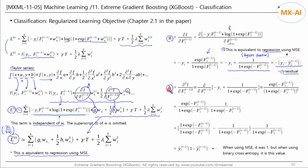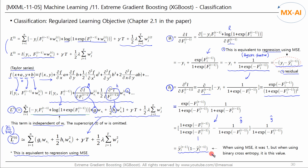Now let's find h. h is the second derivative of the loss with respect to f. Differentiating the above result with respect to f again, we get h = y-hat * (1 - y-hat). When using mean squared error in regression, h was 1. However, in classification using binary cross-entropy, h is this formula: y-hat multiplied by (1 - y-hat).